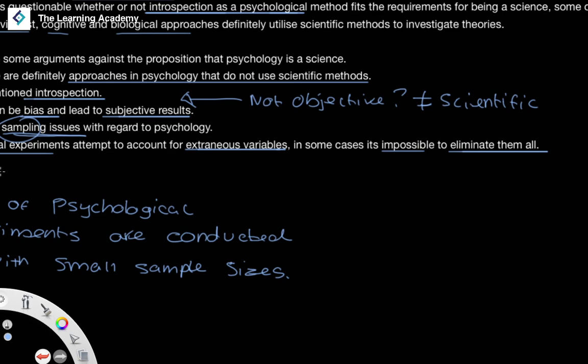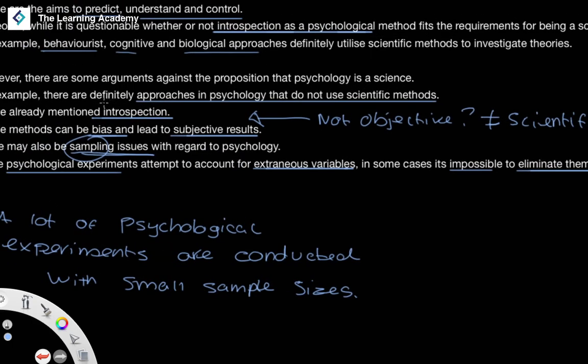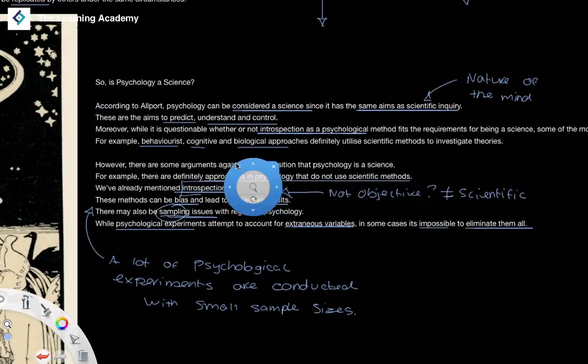especially with subjects like introspection, where we have so many, there are so many near infinite number of extraneous variables that it might be impossible to ever eliminate them all and have a truly controlled environment to conduct psychological experiments.